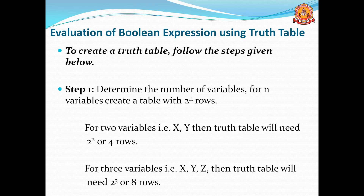For example, if there are two variables, then the table needs 2^2 = four rows. If three variables, 2^3 = eight rows are required. If four variables, 2^4 = sixteen rows are required. So you can write the total number of rows based on 2^n for n variables.